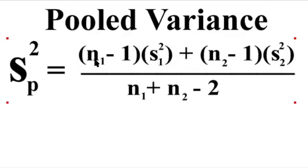So remember, N1 is the sample size of group 1. N2 is the sample size from group 2. S squared 1 is the variance of group 1. S squared 2, sub 2, is the variance of the second group, right? And we're just going to plug and chug.